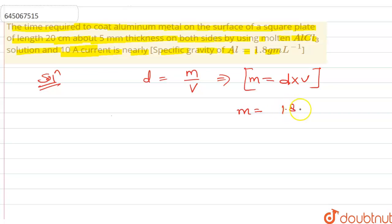m equals density, which is here 1.8, into volume. The plate length is 20 centimeters, about 5 mm thickness, so it will be 20 into 5. Convert into the same unit—that is 10 to the power minus 3—so that is equal to 0.18 grams. That is the required value of mass.